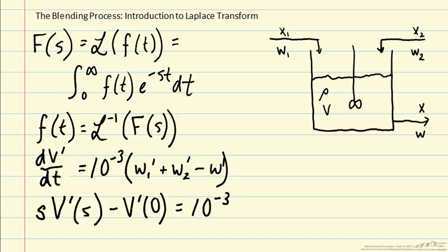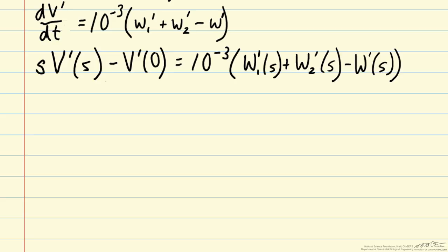And we get 10 to the minus 3 w1 prime of s plus w2 prime of s minus w prime of s. So whenever we take the Laplace transform version of a function, we take what is usually originally in lowercase and then we write it in uppercase. Now that we've taken the Laplace transform of each term on the left-hand side and the right-hand side of this differential equation, we can now algebraically solve for the deviation in volume.